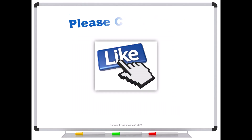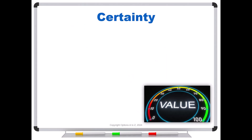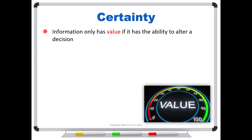But before we do, please be sure to click like and subscribe — it is greatly appreciated and always helps to promote the channel. So to start off with, we have to understand this idea of certainty. Information only has value if it has the ability to alter a decision. And if something is certain, well, then it carries really no information and therefore no value. Why? Because everybody knows.